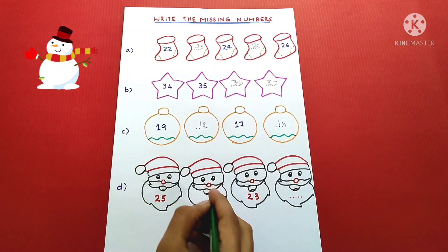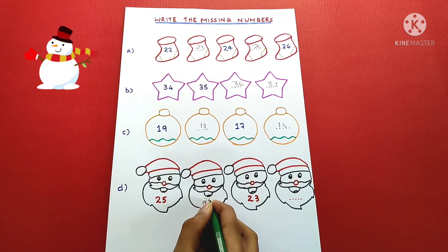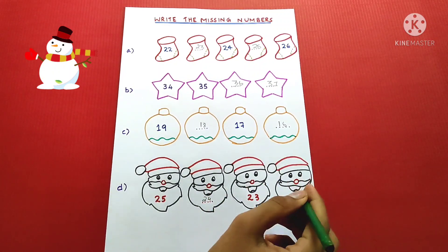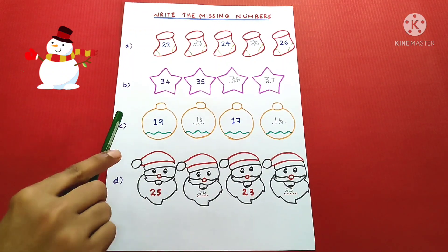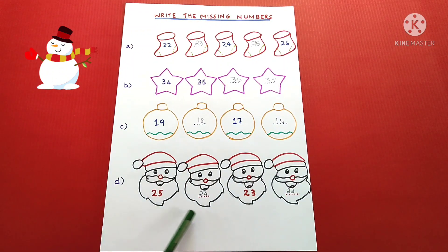25, 24, 23, 22. In question number C and D, we have to count backwards.